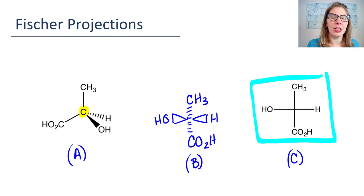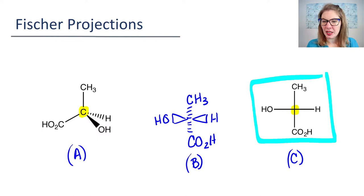One of the keys for Fischer projections is wherever you see just a cross, that is a chiral center — they're automatically telling you that's a chiral center. Over here, this CH3 is not drawn as a cross because that carbon is not chiral. Same with the carbon down here — it's not chiral.